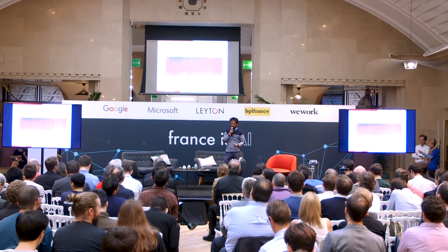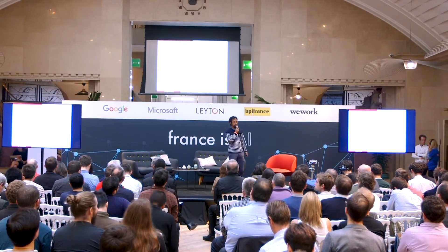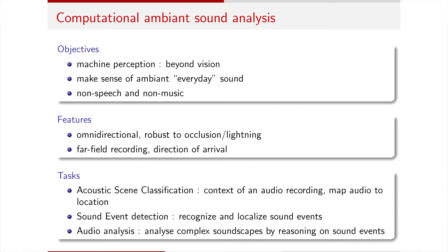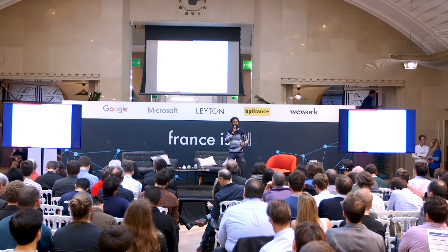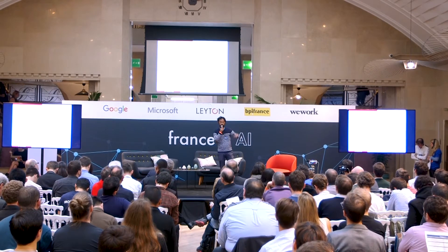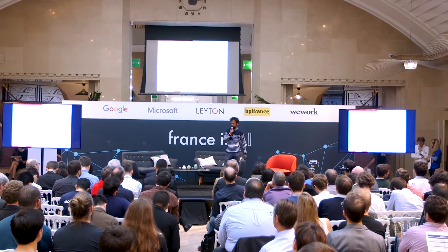The goal of computer sound analysis is to augment machine perception and go beyond vision. We want to make sense of ambient sound — any signal that is mostly non-speech and non-music. What's nice about auditory perception is that it is omnidirectional, robust to occlusion compared to visual perception, and you can even do far-field recording, meaning you can hear a sound that is very far away if it is loud enough.